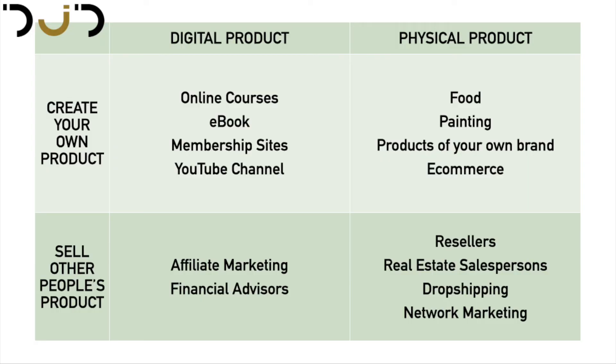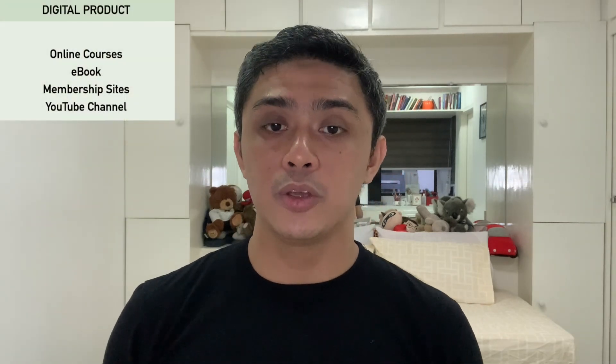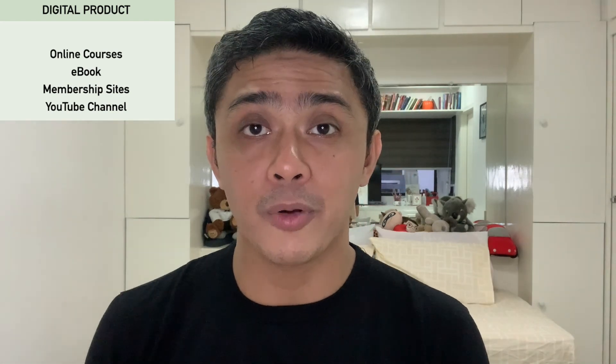I created a matrix for you to understand this really well. You can see in the table there's an intersection of digital product and creating your own product, then digital product with other people's product, and physical product with other people's products. These are the things I believe you can start today, and I personally have tried and done as well. The first is you can create your own digital product.